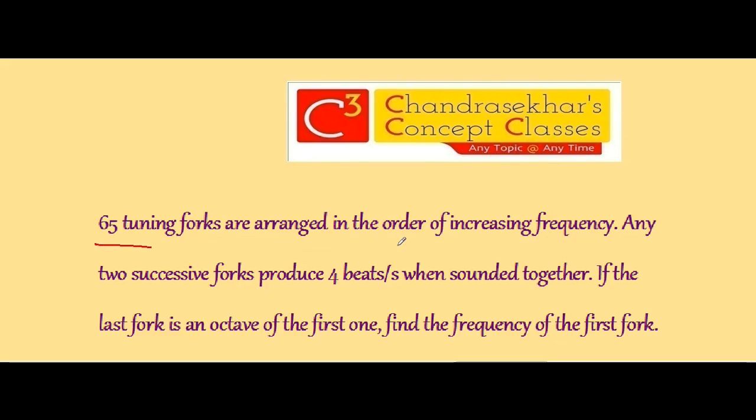65 tuning forks are arranged in the order of increasing frequency. Any two successive forks produce four beats per second when sounded together. If the last fork is an octave of the first one, find the frequency of the first fork.